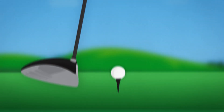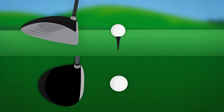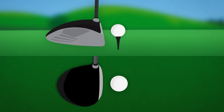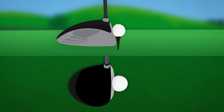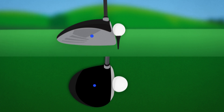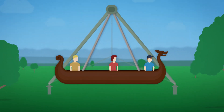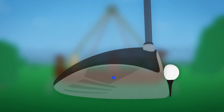TrackMan reports club delivery measurements at the time of maximum compression and at the geometric center of the club head. Using the pendulum ride example, this would be Jill's location at the time of maximum compression.